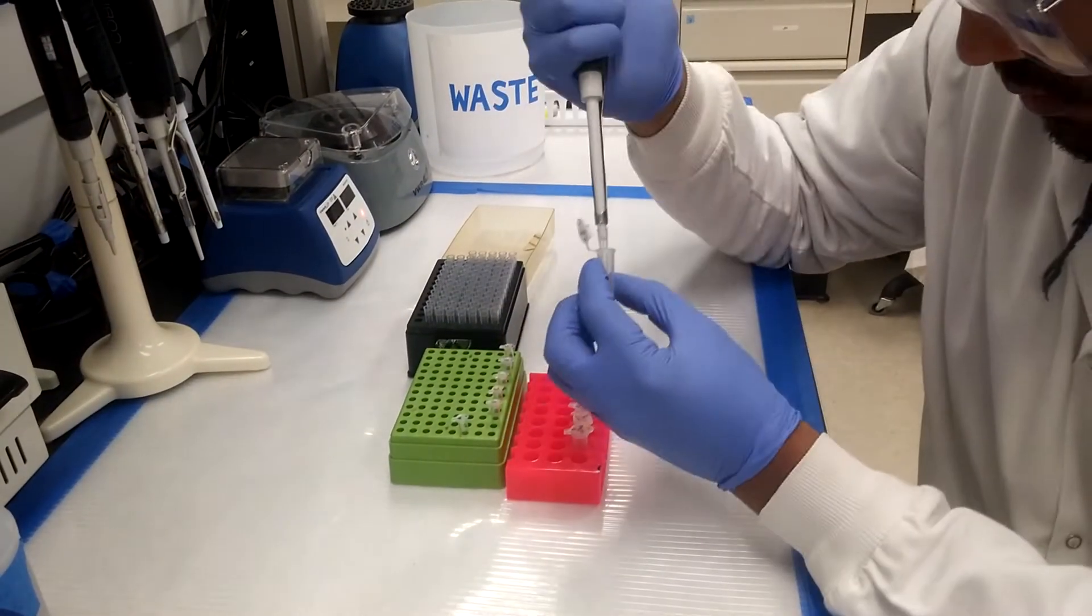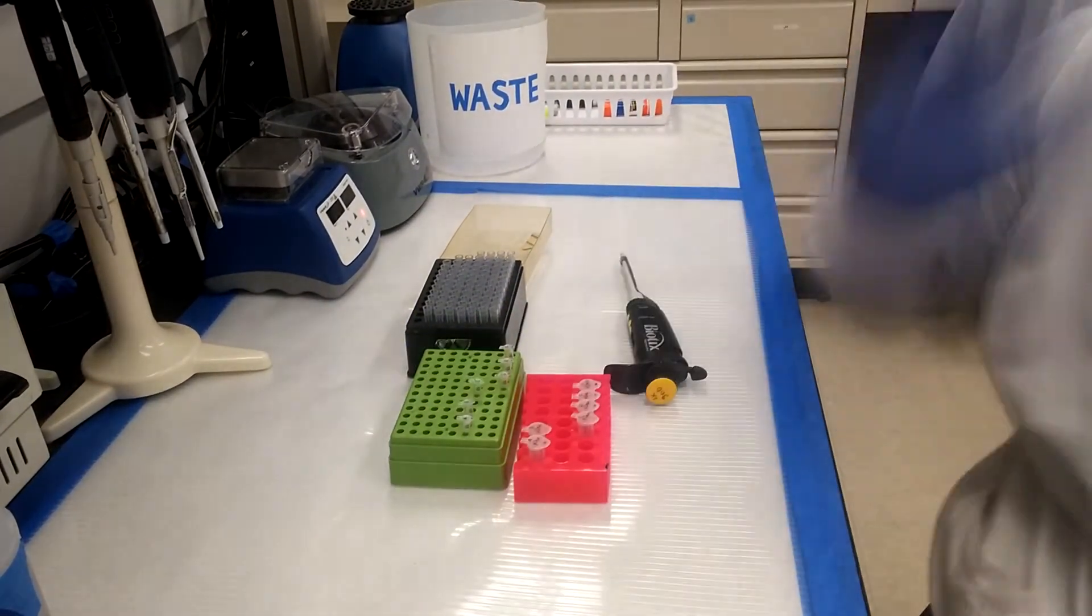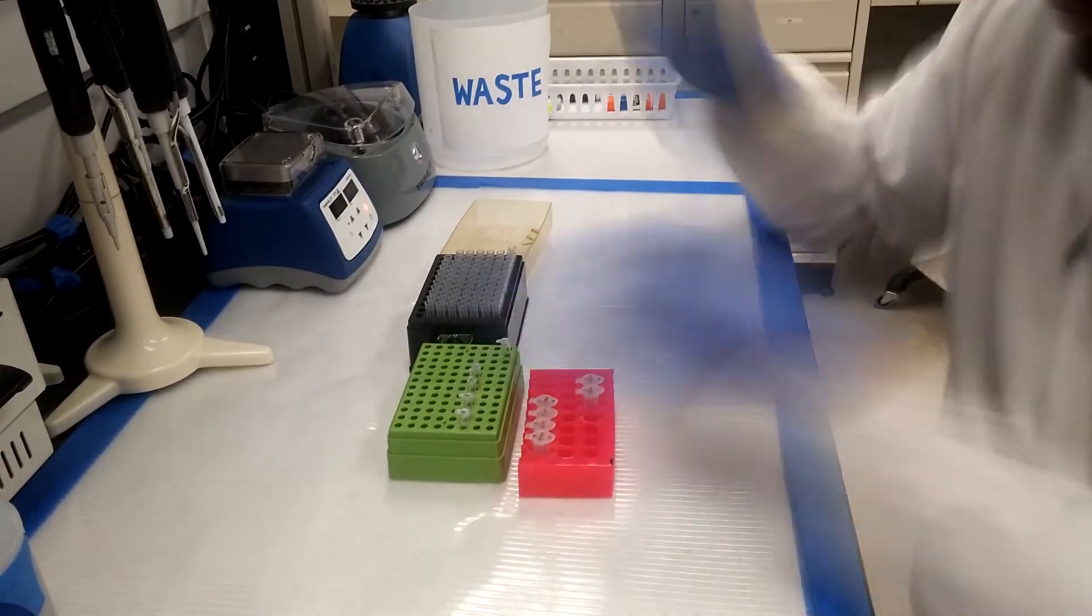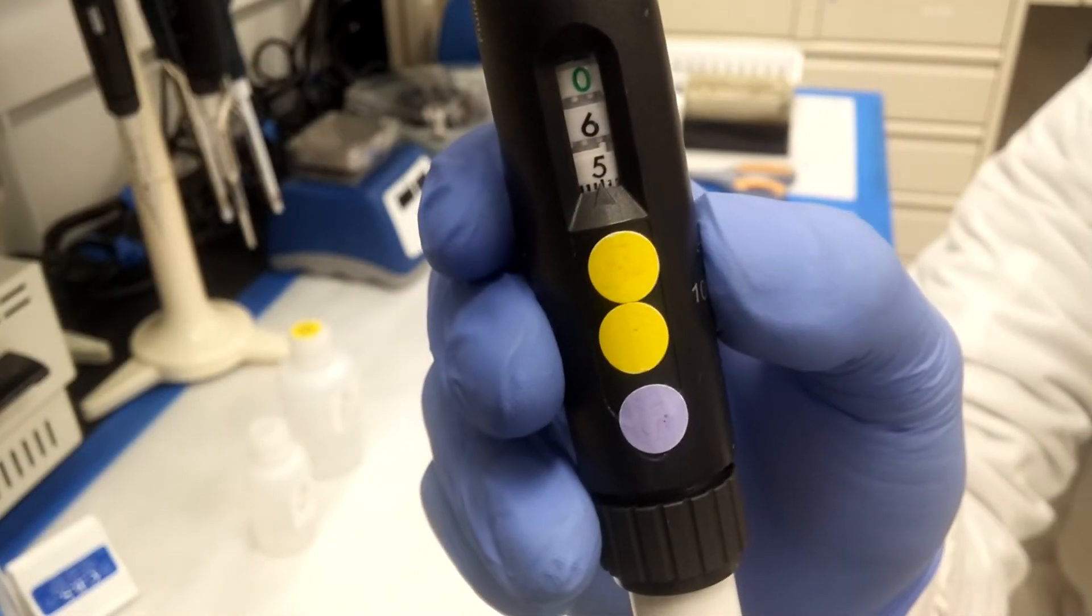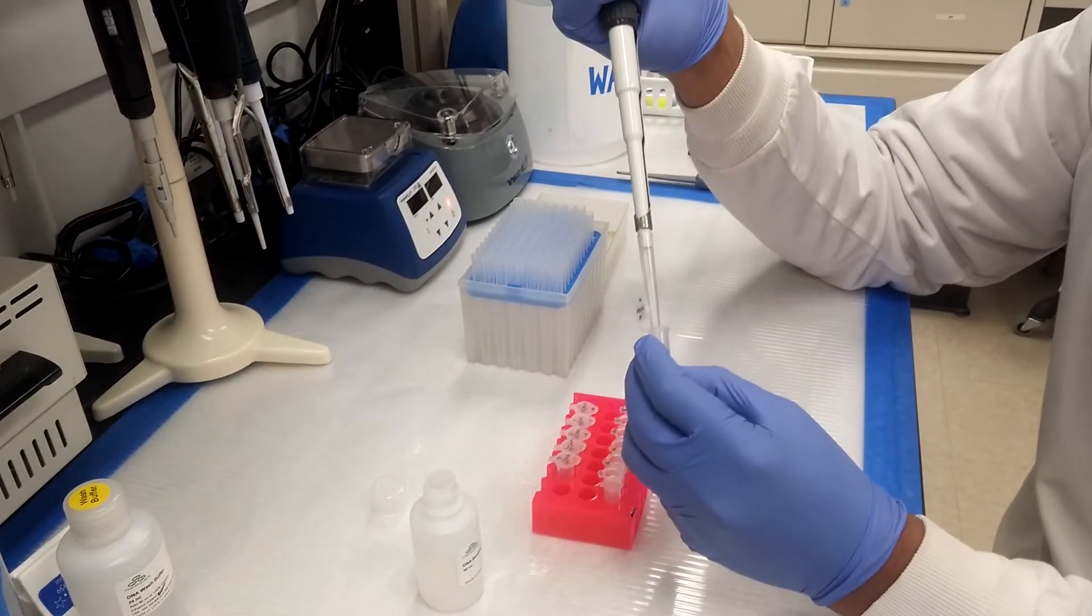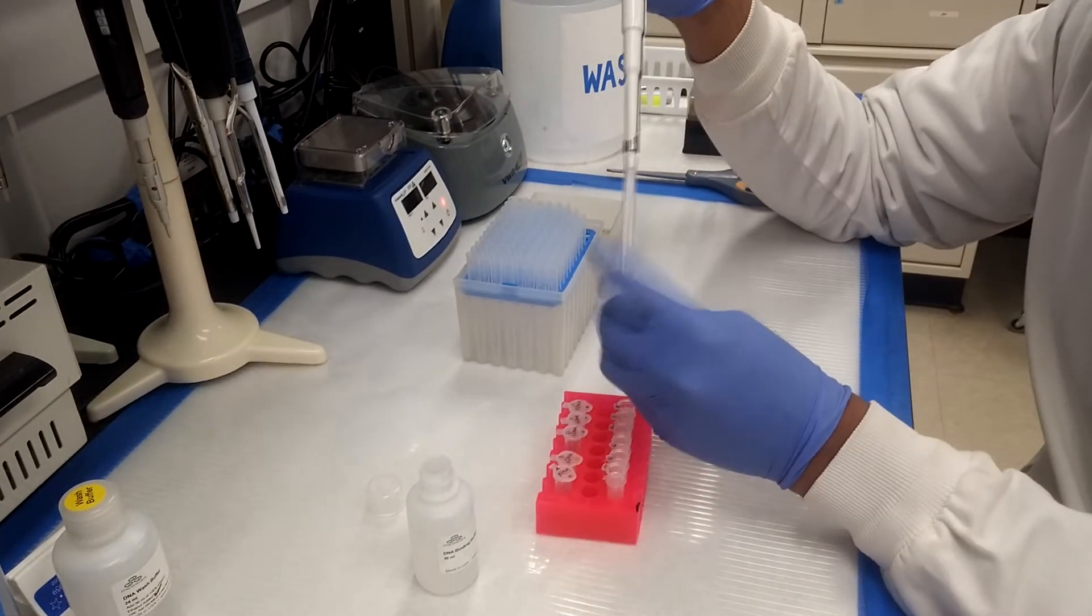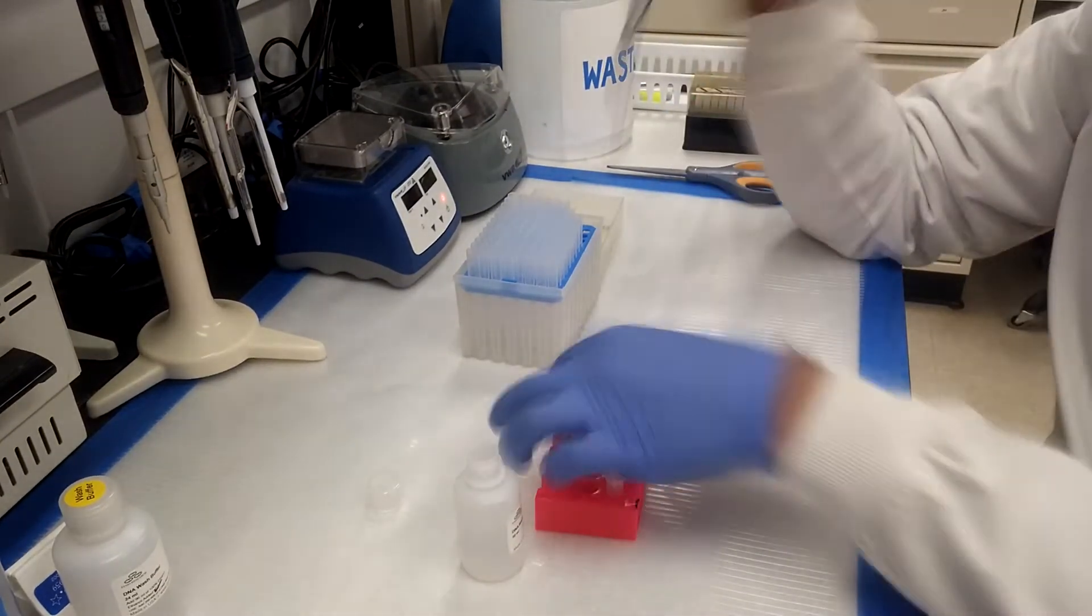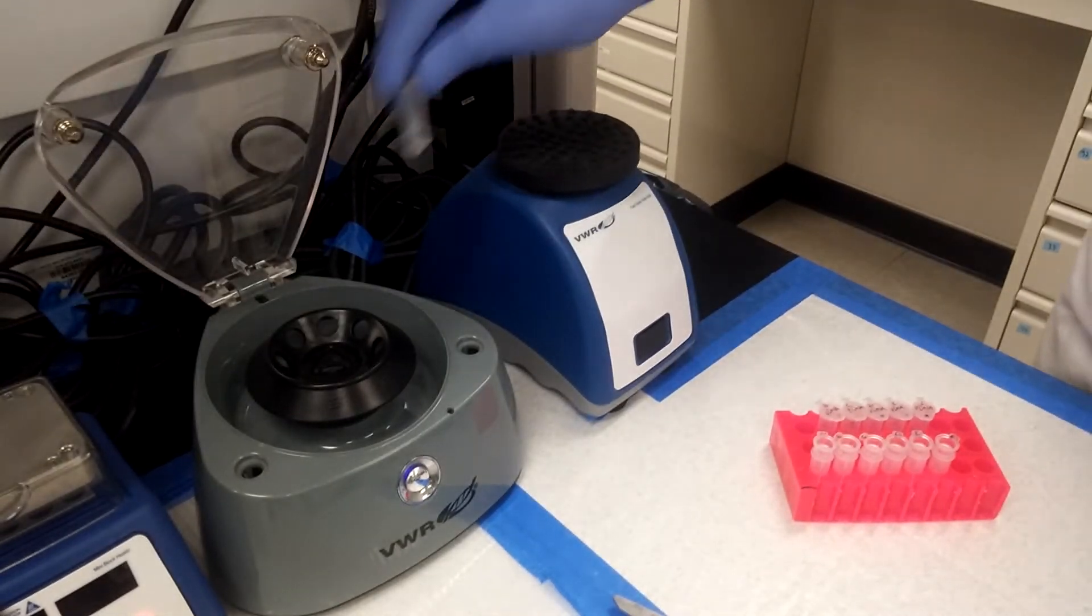The corresponding amplified DNA samples from the PCR procedure are moved into the first set. 650 microliters of DNA binding buffer are added to each tube. The tubes are then vortexed and centrifuged.